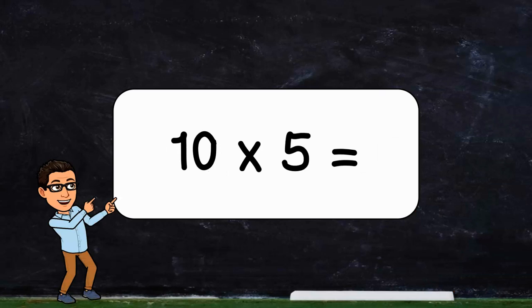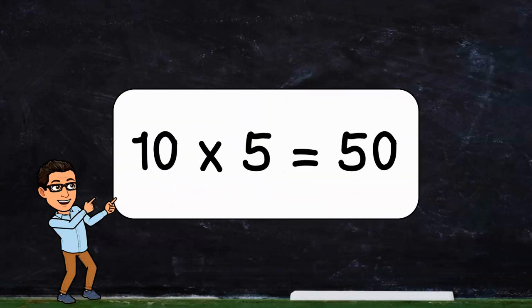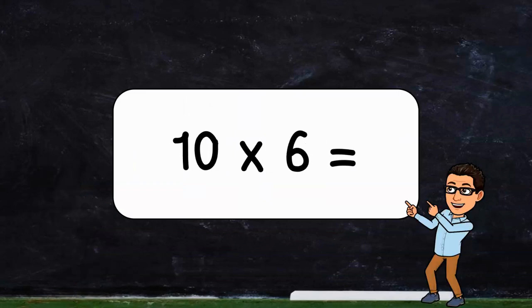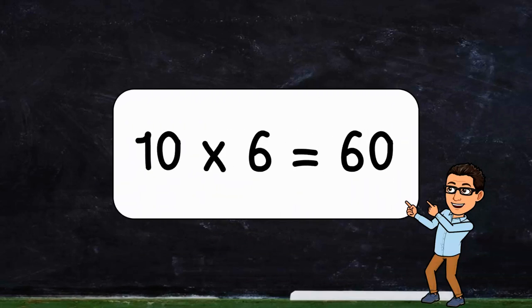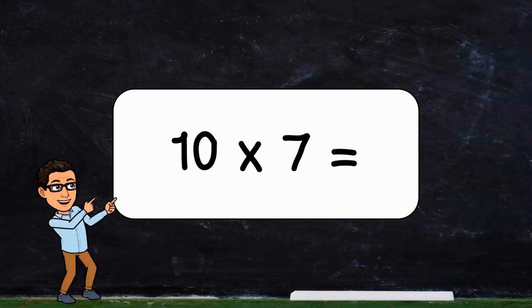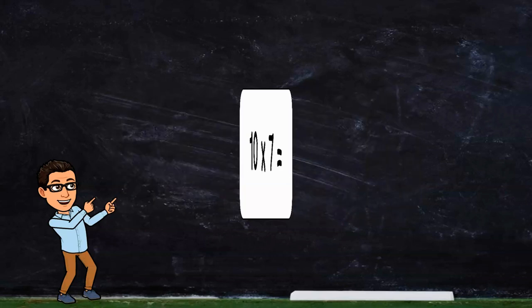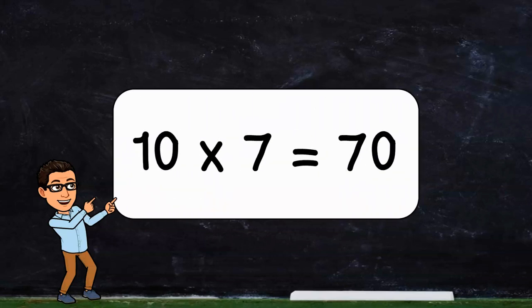10 times 5, 10 times 5 equals 50. 10 times 6, 10 times 6 equals 60. 10 times 7, 10 times 7 equals 70.